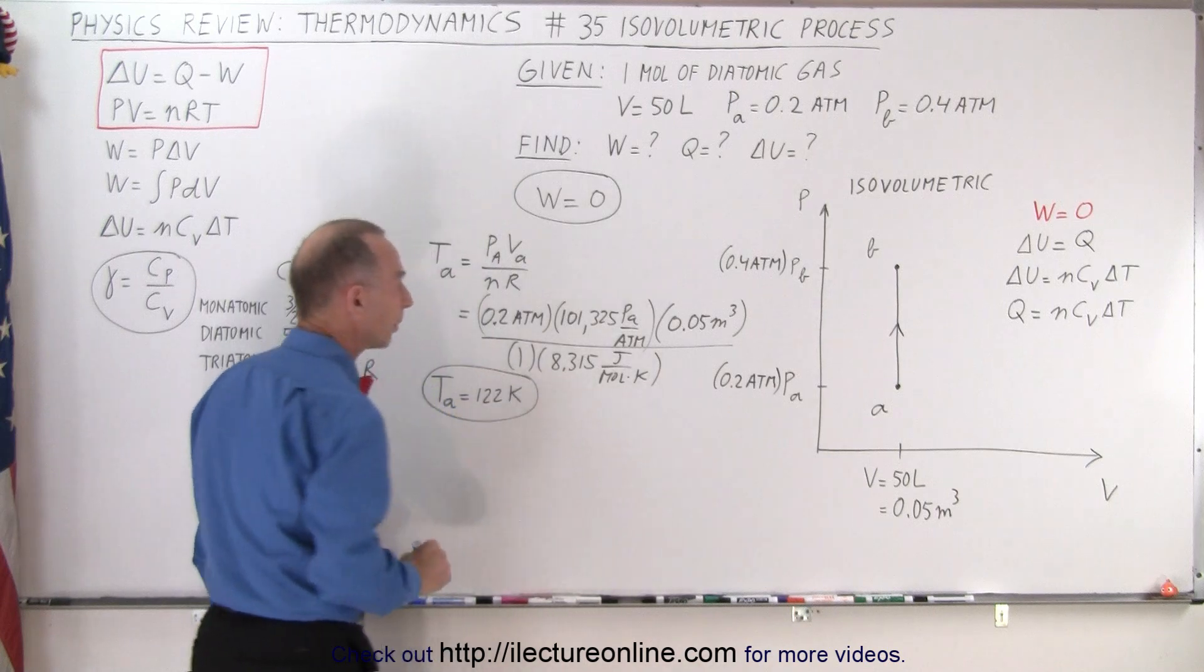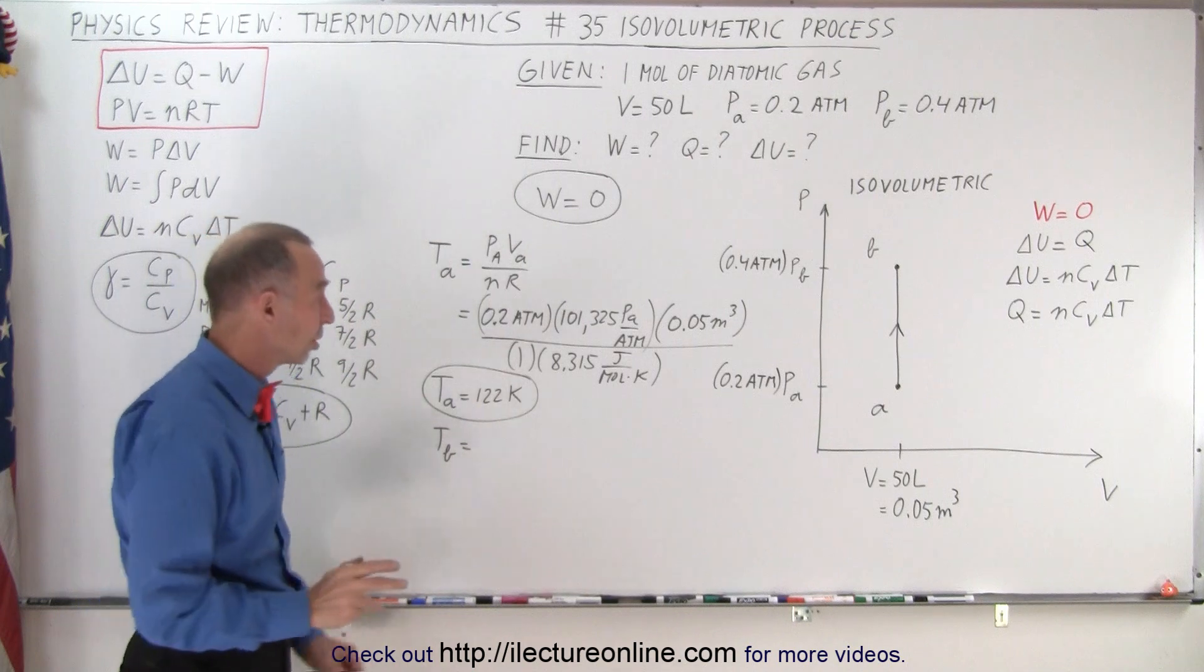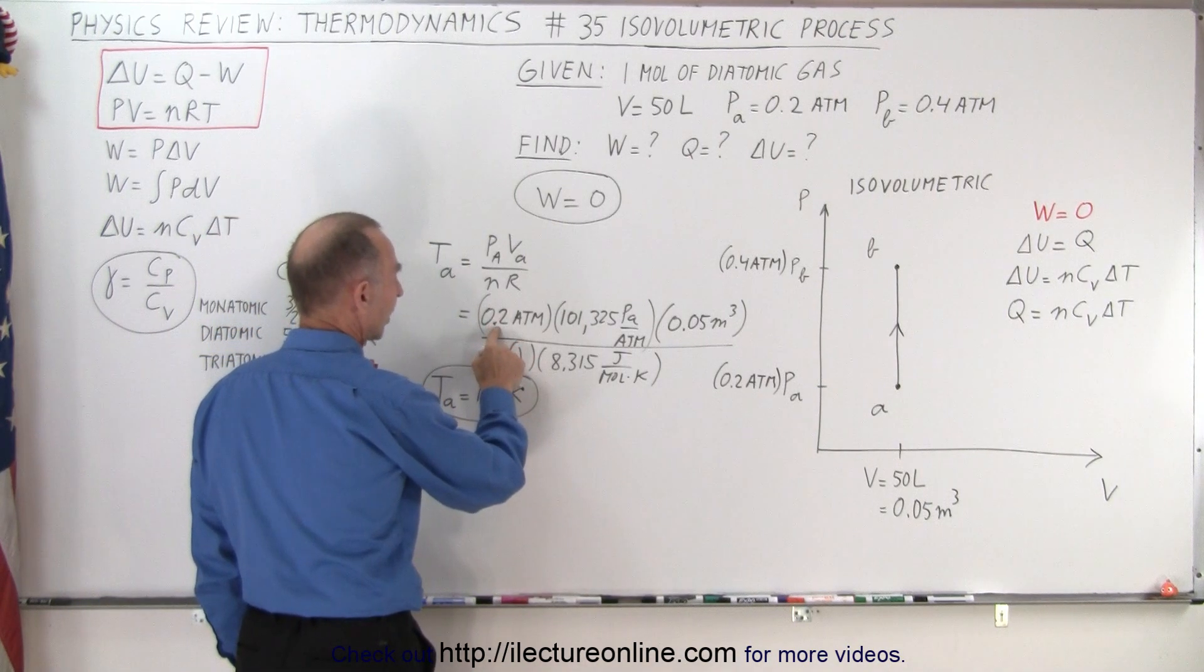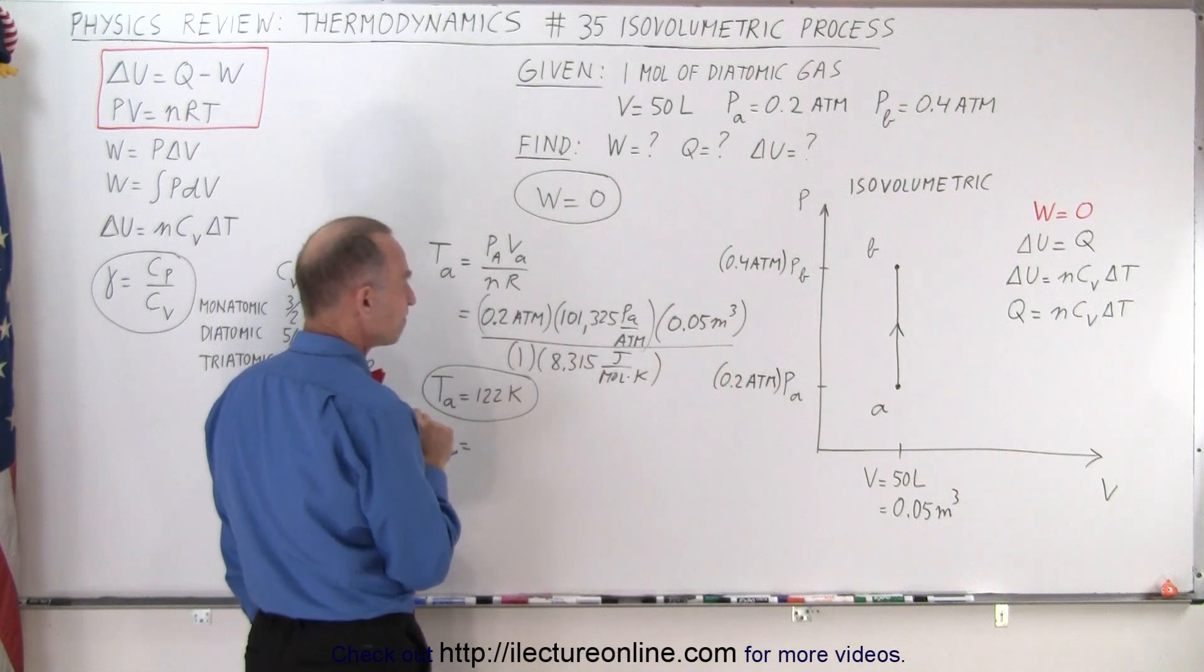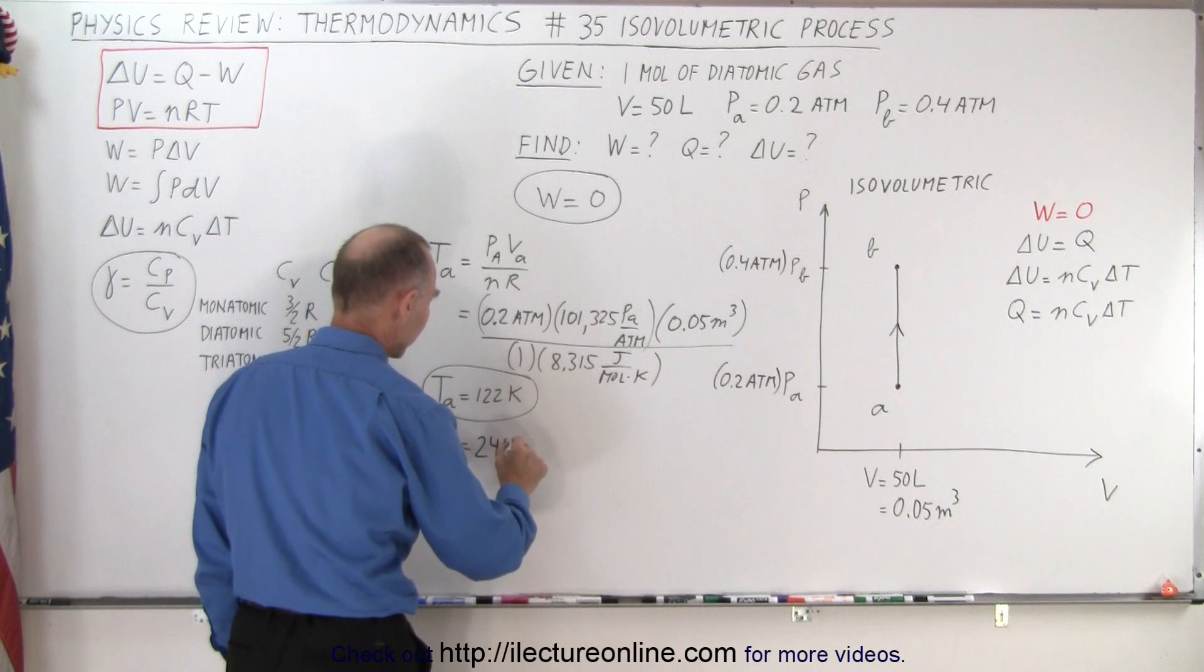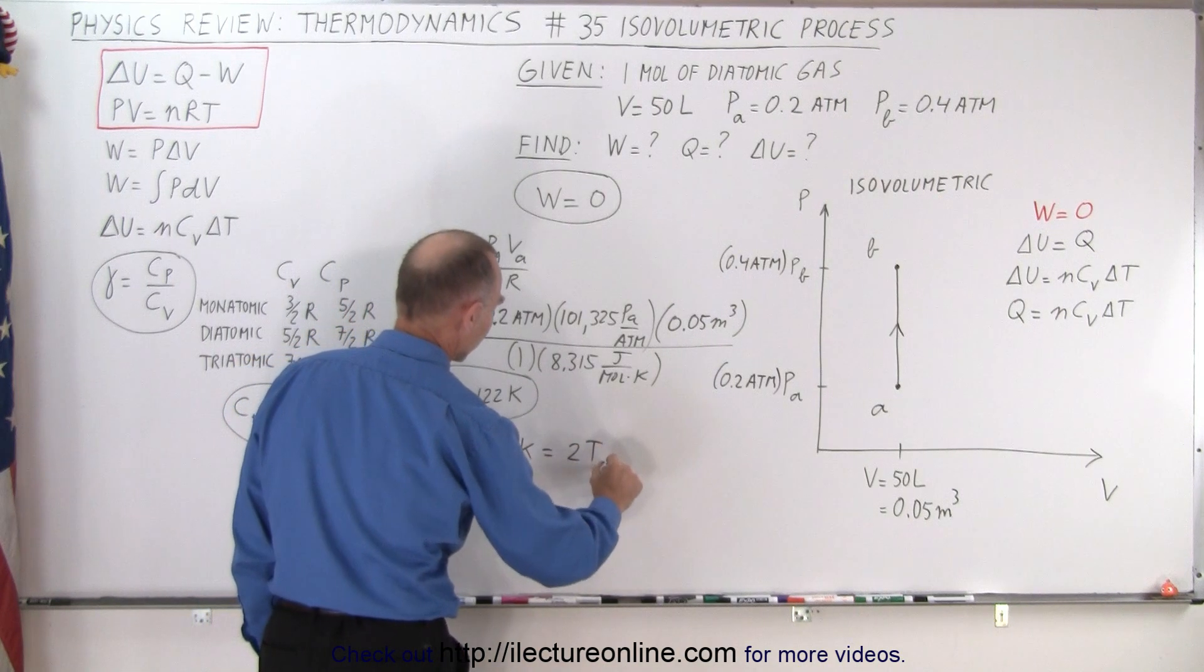Now what about temperature at B? Notice the only thing that would change is that the pressure would go from 0.2 to 0.4 atmospheres. Everything else would stay the same. Therefore if the pressure doubles, temperature doubles so we get 244 Kelvin, because that's equal to 2 times the temperature at A.